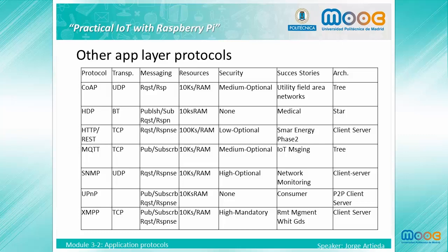MQTT is a standard using the publish-subscribe messaging protocol on top of the TCP/IP protocol. It is designed for connections with remote locations where a small code footprint is required or network bandwidth is limited. The publish-subscribe message pattern requires a message broker, which is responsible for distributing messages to interested clients based upon the topic of the message.